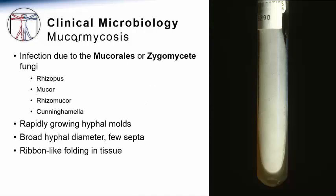As mentioned before, this infection called mucormycosis is caused by environmental molds that are ubiquitous in nature. In the scientific and medical literature, these fungi are called zygomycetes or the mucorales fungi, so you must be familiar with both names, although they basically refer to the same group of species. Some of the more common genus and species names among the mucorales that cause human disease are rhizopus, mucor, rhizomucor, and cunninghamella.